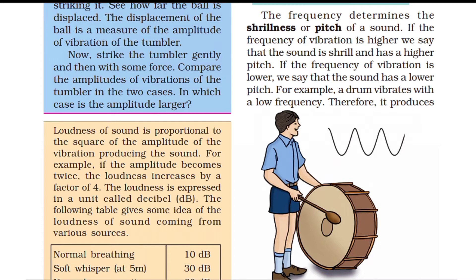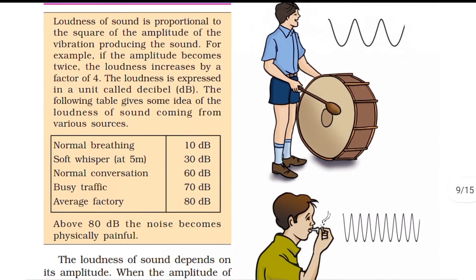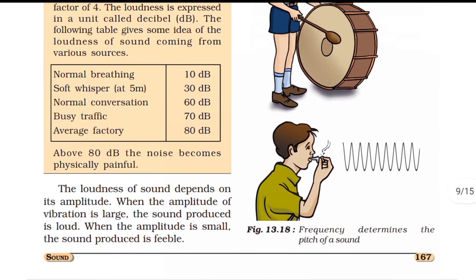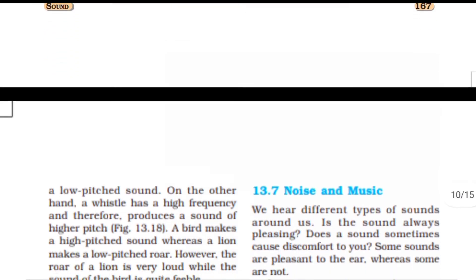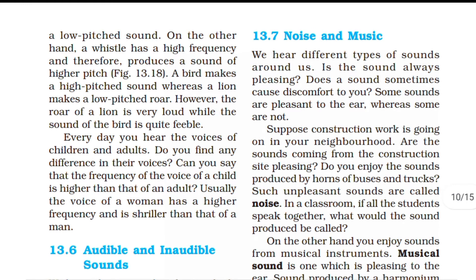A drum vibrates with low frequency, so it produces a low-pitched sound. On the other hand, a whistle has high frequency and therefore produces a sound of higher pitch. A bird makes a high-pitch sound whereas a lion makes a low-pitch sound.